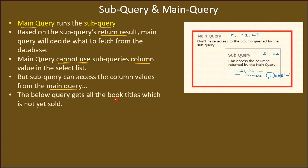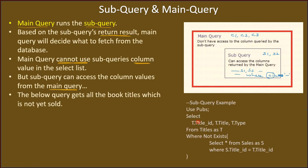The below query gets all the book titles which are not yet sold. We are using the pubs database, picking title ID, title, and type from the titles table with alias T. In the WHERE condition, we are using NOT EXISTS, and for NOT EXISTS we are passing a subquery. We can call this the main query.